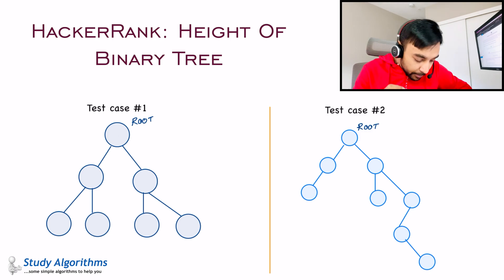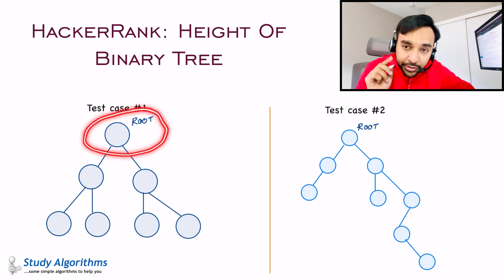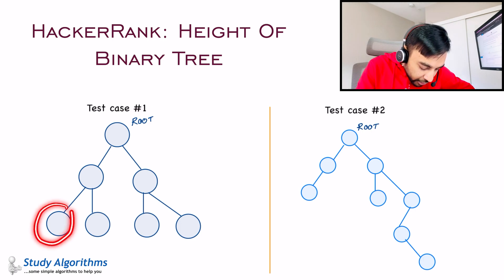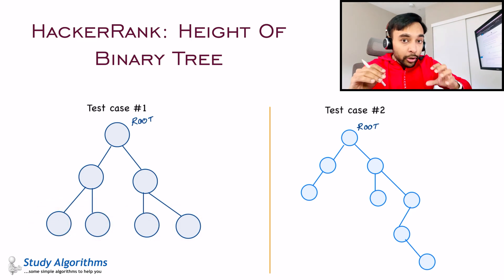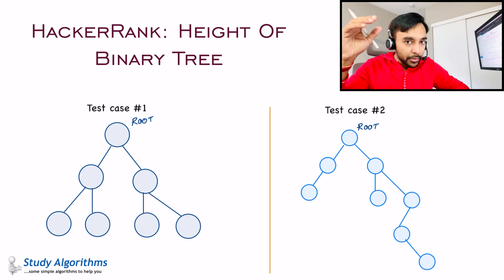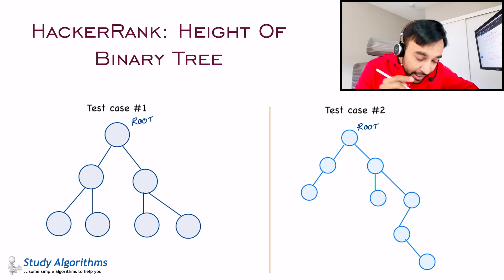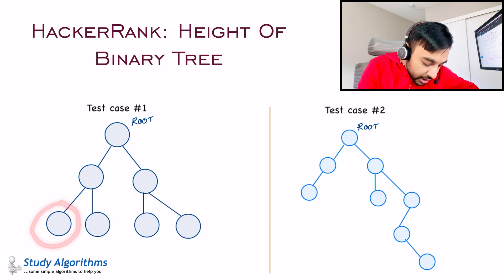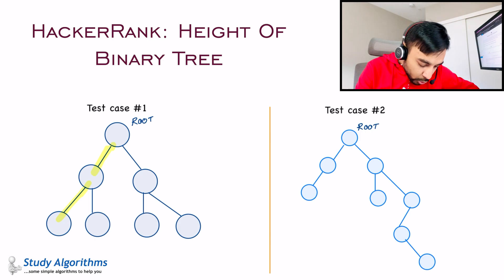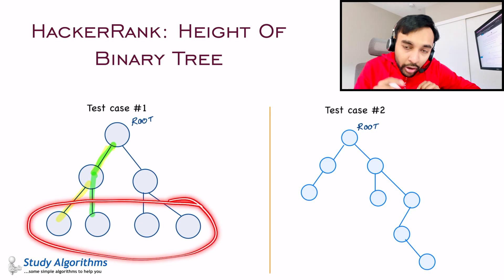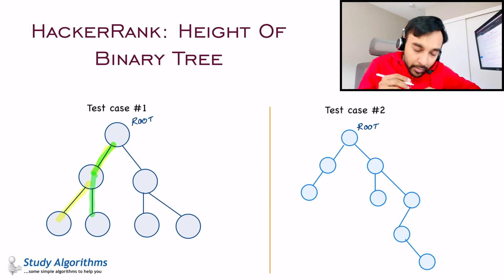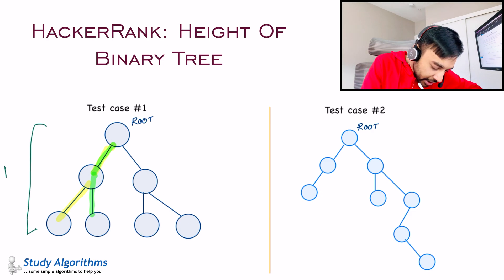Let us take up test case number one. In test case number one, you have a root node and four leaf nodes in this tree. The height of a binary tree would be the maximum distance of all of these four nodes from the root. For the first leaf node, the distance is 2. For node number two, the distance is again 2. The distance of all four nodes is 2, so the height of this binary tree is equal to 2.